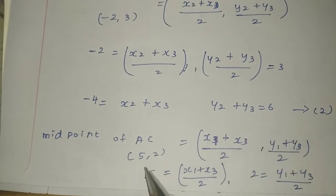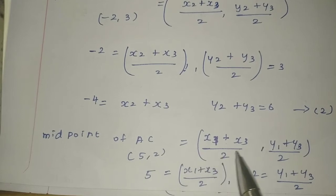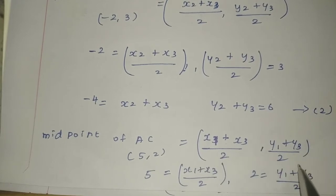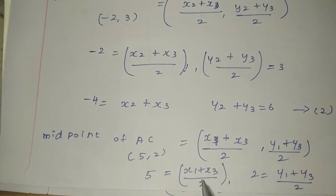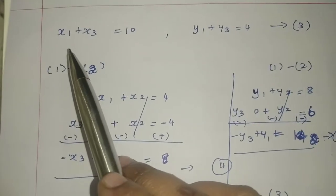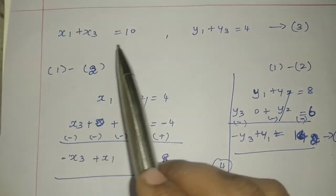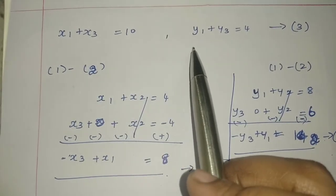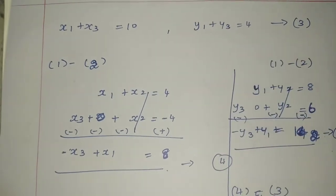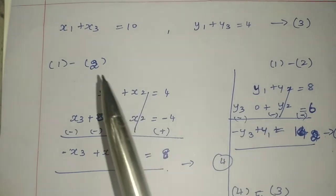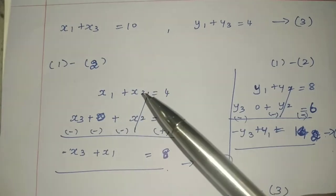For midpoint of AC equals (5,2), we have 5 equals (x1 + x3)/2 and 2 equals (y1 + y3)/2. Cross-multiplying: x1 + x3 equals 10 and y1 + y3 equals 4. This is the third equation.